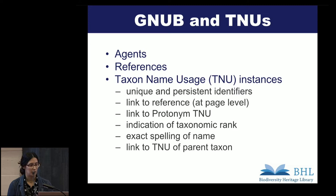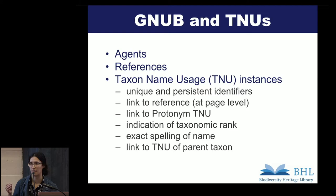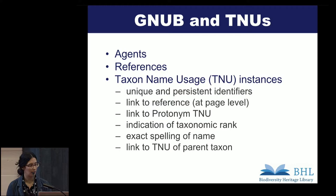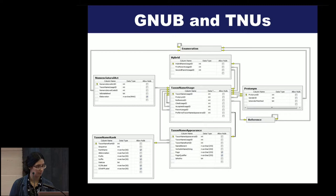The TNUs are used to decipher protonyms. A protonym is the first time a name is used to identify an organism. TNUs contain unique and persistent identifiers. They contain links to the reference at a page level, if possible, which is done in BHL, and links to the protonym TNU. It also includes the indication of the taxonomic rank, the exact spelling of the name within the reference, and a link to the TNU that represents the immediate parent taxon. This is what the data model just for the TNUs looks like, and in this way different spellings of the names are brought together into one taxonomic concept.